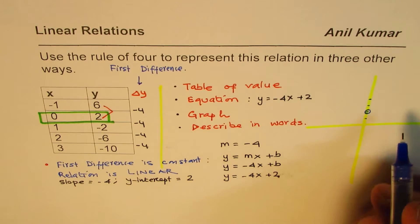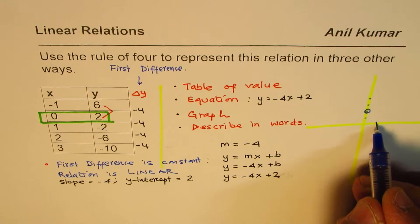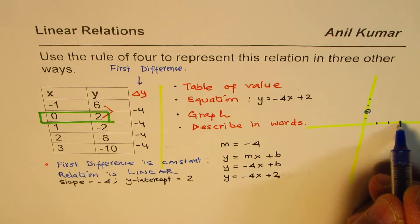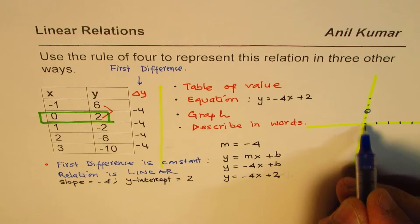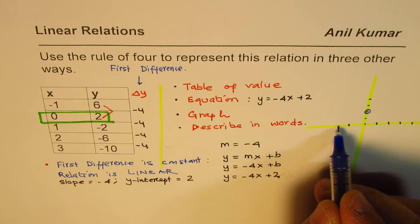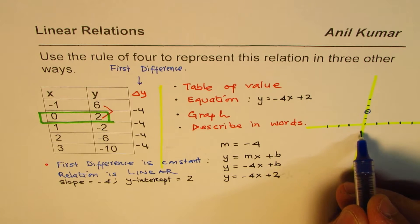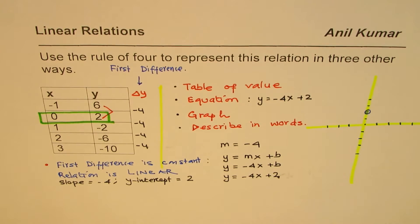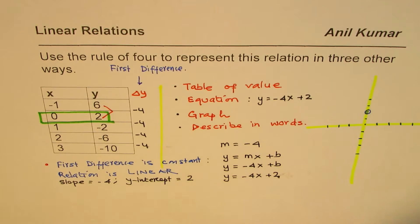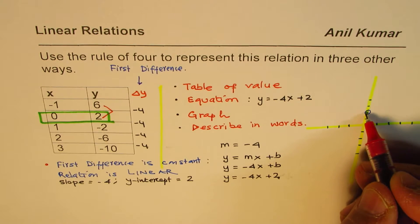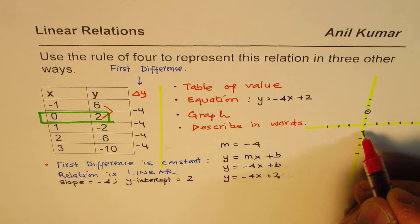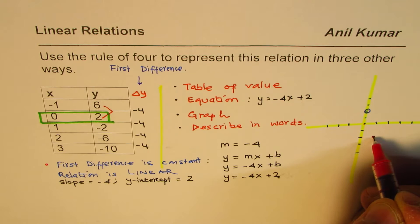Slope of minus 4 means, let me make some points here, 1, 2, 3, 4. This is 0 for us. 1, 2, 3. And let's go down. 1, 2, 3, 4. Now, when I say that the slope is minus 4, it means we can go down 4 units and 1 to the right. So, from here, 1, 2, 3, 4, and 1 unit right. So, we get that point.